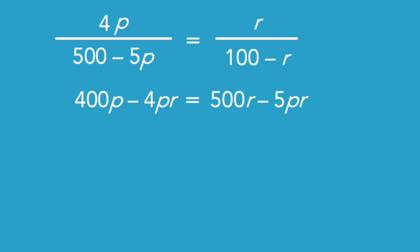Now, since I want to have all the R's on the same side, I'll add 4PR to both sides. And then I'll have 400P equals 500R minus 5PR. The next step would be to pull out the R as a common factor, again, because that's the thing we're trying to solve for.